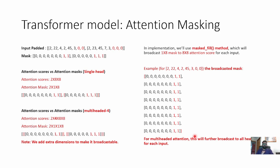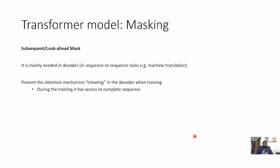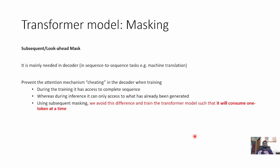The next case is subsequent masking, also called look-ahead masking. This is mainly needed for the decoder, and more specifically in sequence-to-sequence tasks like machine translation. It is required to prevent the attention mechanism from cheating during training: during training it has access to the complete sequence, whereas during inference it can only access what has already been generated. Using subsequent masking we bridge this difference and train the transformer such that it consumes one token at a time, making training similar to inference.